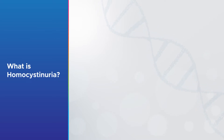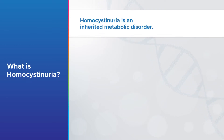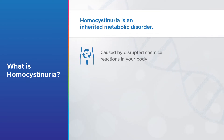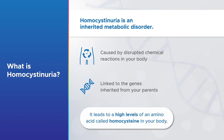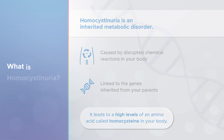So what is homocystinuria? The short answer is homocystinuria is an inherited metabolic disorder. Metabolic disorders occur when chemical reactions in your body are disrupted and don't work properly. This disruption is linked to the genes you inherited from your parents, and this particular disorder causes high levels of an amino acid called homocysteine to build up in your body.